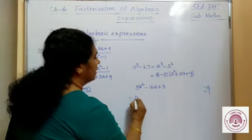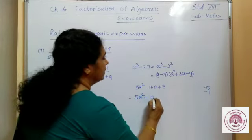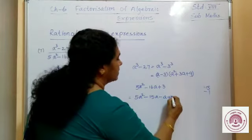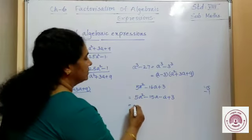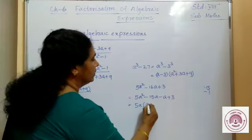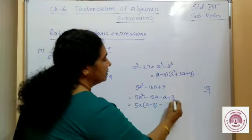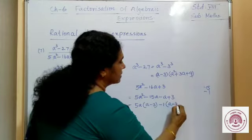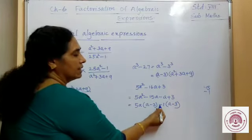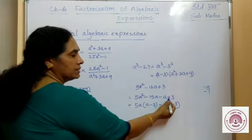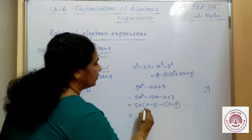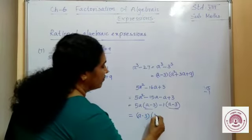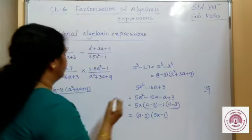So, we split the middle term: 5a² - 15a - 1a + 3. From the first two terms, 5a is common: 5a(a - 3). From the last two terms, taking -1 common: -1(a - 3). Because we took negative outside, the sign inside changes so minus times minus gives plus. Common factor is (a - 3), giving factors (a - 3)(5a - 1).